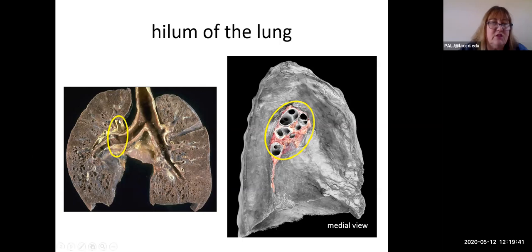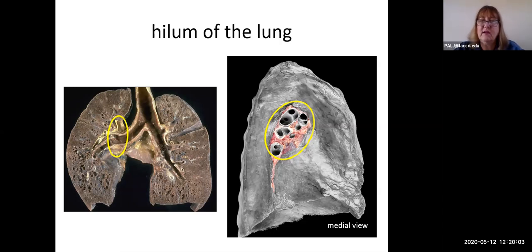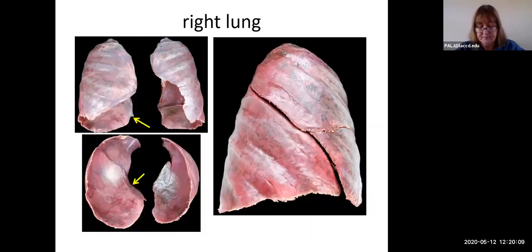Make sure you write 'hilum of the lung' because multiple organs have a hilum. In the picture on the left you can clearly see where the airways are entering the lung — the area surrounded by the yellow circle. In the picture on the right it's showing not only airways but also both arteries and veins exiting and entering the lung at that area.